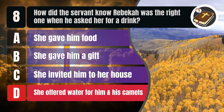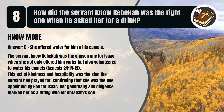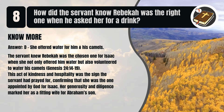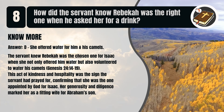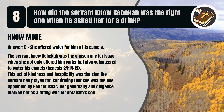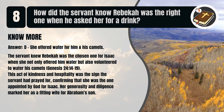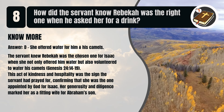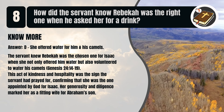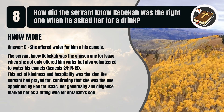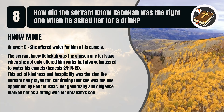That's D. She offered water for him and his camels. The servant knew Rebekah was the chosen one for Isaac when she not only offered him water but also volunteered to water his camels. Genesis chapter 24 verses 14 to 19. This act of kindness and hospitality was the sign the servant had prayed for, confirming that she was the one appointed by God for Isaac. Her generosity and diligence marked her as a fitting wife for Abraham's son.